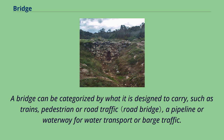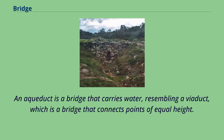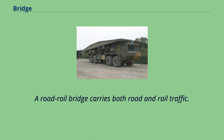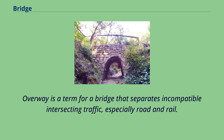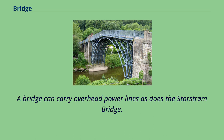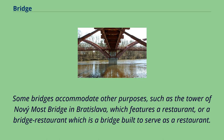A bridge can be categorized by what it is designed to carry, such as trains, pedestrian or road traffic, a pipeline or waterway for water transport or barge traffic. An aqueduct is a bridge that carries water, resembling a viaduct, which is a bridge that connects points of equal height. A road-rail bridge carries both road and rail traffic. An overway is a term for a bridge that separates incompatible intersecting traffic, especially road and rail. A bridge can carry overhead power lines, as does the Storstrom Bridge. Some bridges accommodate other purposes, such as the Tower of Nový Most Bridge in Bratislava, which features a restaurant, or a bridge restaurant which is a bridge built to serve as a restaurant.